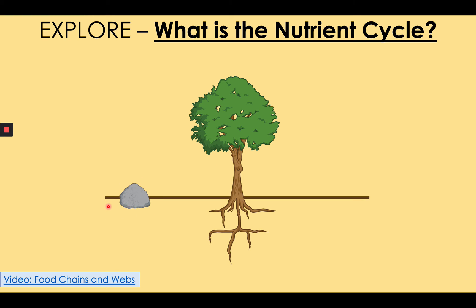A rock is weathered by the rain, by freeze-thaw weathering, and by biological weathering — plants growing in it — which breaks the rock down into tiny pieces of dust and sand. The minerals from the rock therefore go into making the soil. The soil in the ground is made of broken-down weathered rocks and decomposed organic matter. These minerals end up being absorbed through the roots of the producer, which allows the producer to grow.